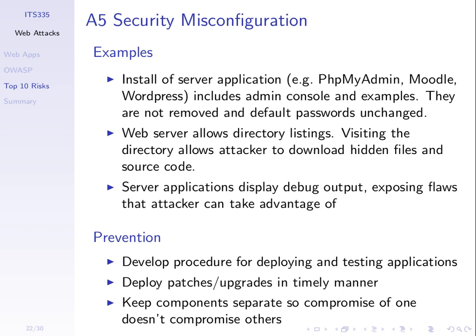Security misconfiguration: for example, you install some software and don't change the default password. An attacker comes along, knows the default password, and logs in with access. Setting up your server and applications to be secure from the start — configuring them correctly. Some web applications show debugging information; if an error occurs, it shows error messages. For production websites, that's a bad idea because a malicious user can learn something about what's happening on your server based on those error messages. When you release your website to the public, make sure all debugging features are turned off.